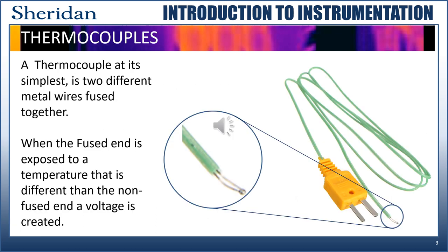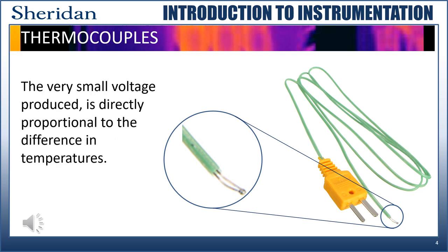A thermocouple is a simple device where two dissimilar metals are fused together. When the fused end is exposed to a heat that differs from the non-fused end, a voltage is created. The voltage thus created is very small, but is directly proportional to the difference in temperatures. The greater the difference, the greater the voltage produced.